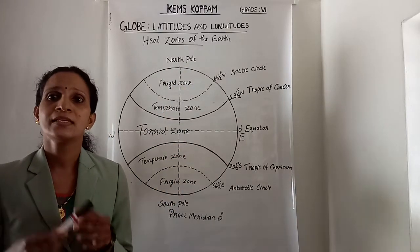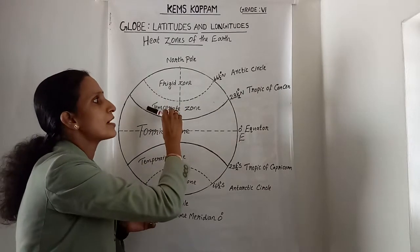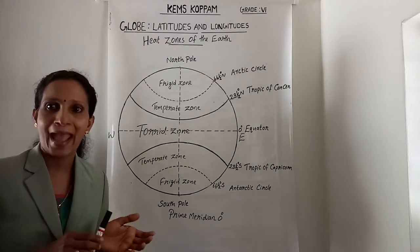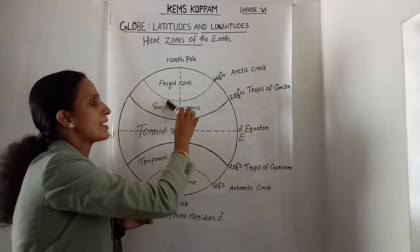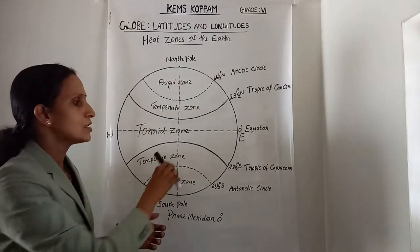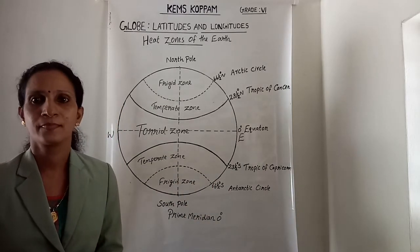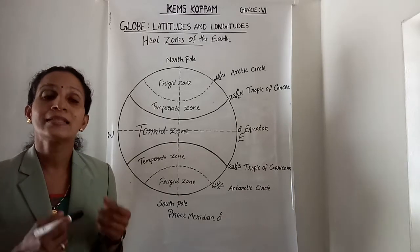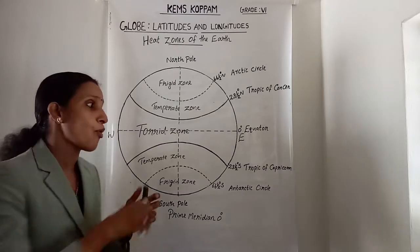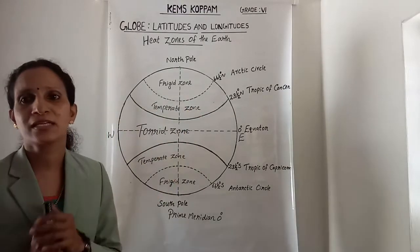As such, the areas bounded by the Tropic of Cancer and the Arctic Circle in the northern hemisphere, and the Tropic of Capricorn and the Antarctic Circle in the southern hemisphere, have moderate temperatures.